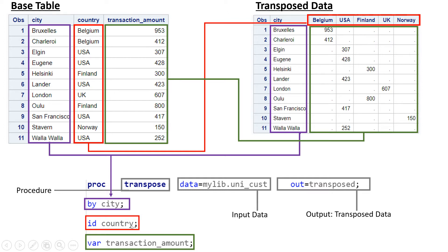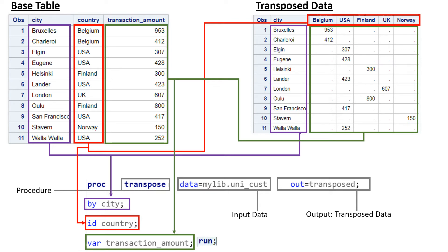With ID you supply the variable name which needs to be transposed from observation to variable name - in our case that variable was country. The transaction amount, which we want to appear as values, goes under the VAR statement. End every line with a semicolon, and at the end use RUN followed by a semicolon. This is the full syntax and the data will be transformed accordingly.